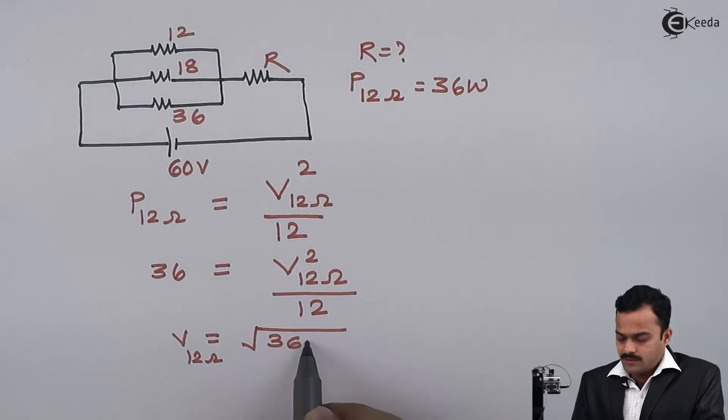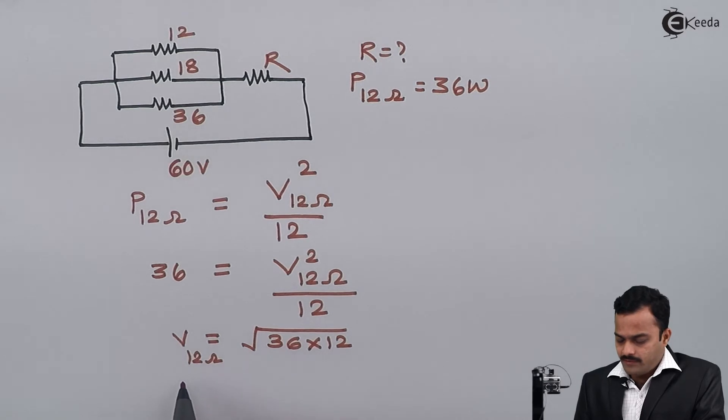I'm getting V₁₂ₒₕₘ as the square root of 36 times 12. After solving this, I get the voltage of the 12 ohm resistance as 20.7846 volts.